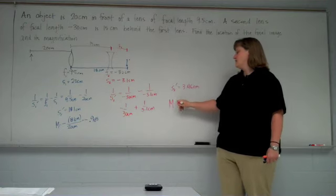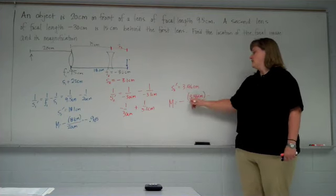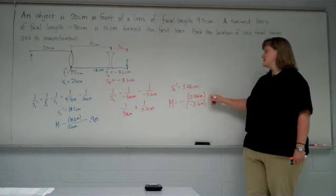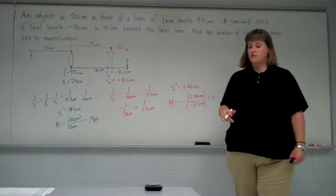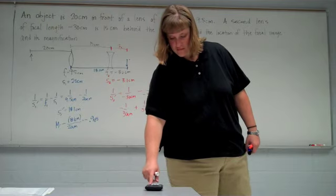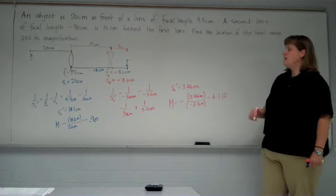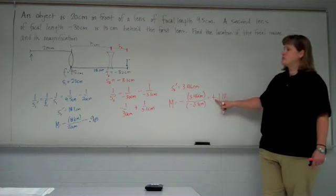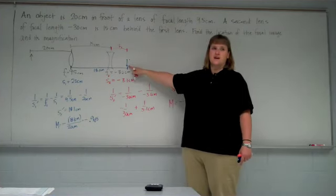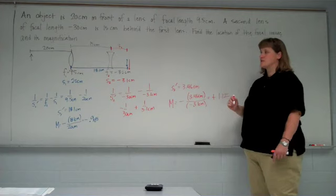Magnification. Negative S prime over S. We're going to get a positive value. A little bit over 1. That means getting a positive value means this final image has the same orientation as the image that we used as the object. So it's also inverted relative to the original object.